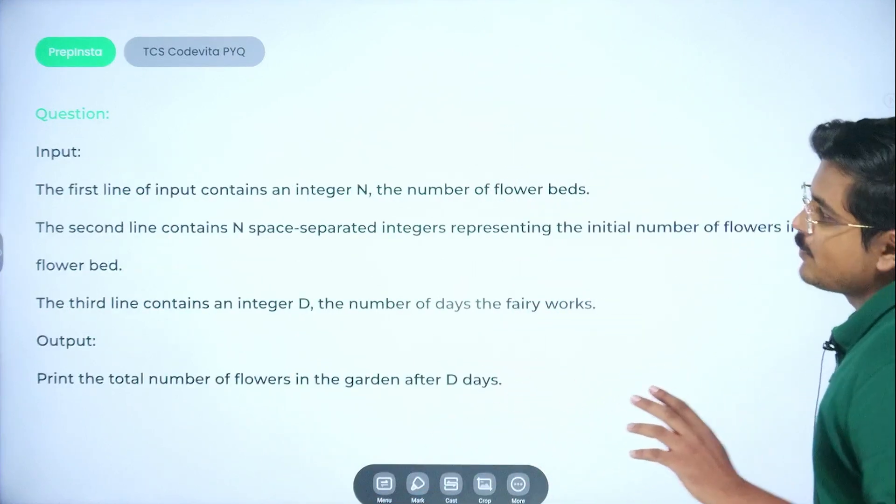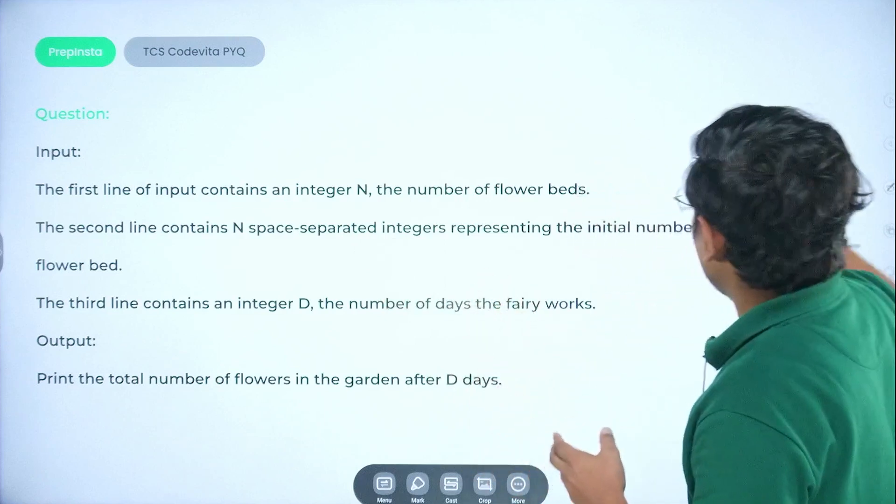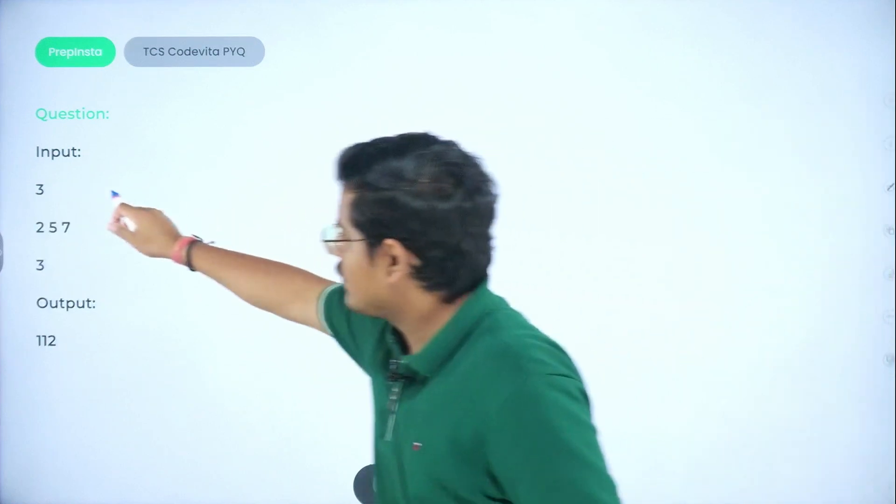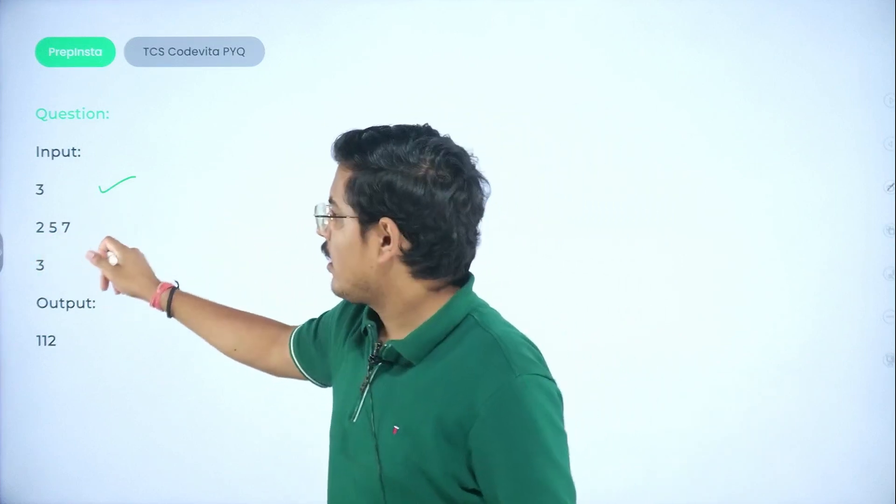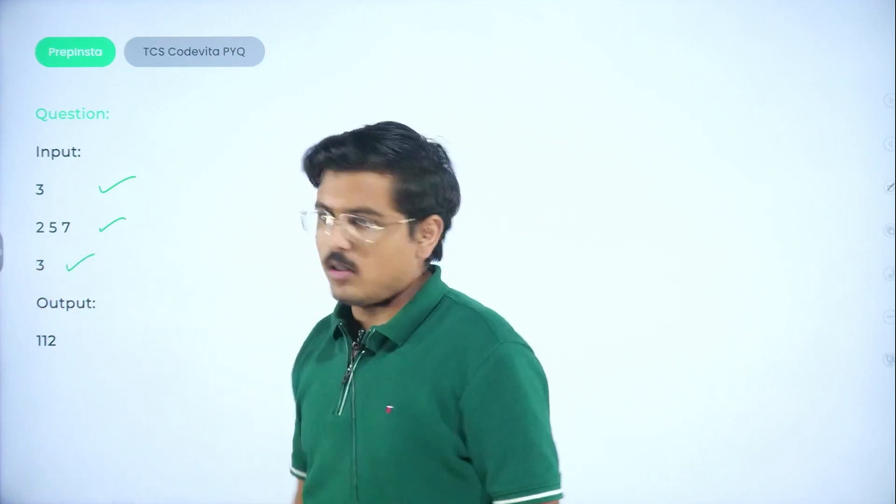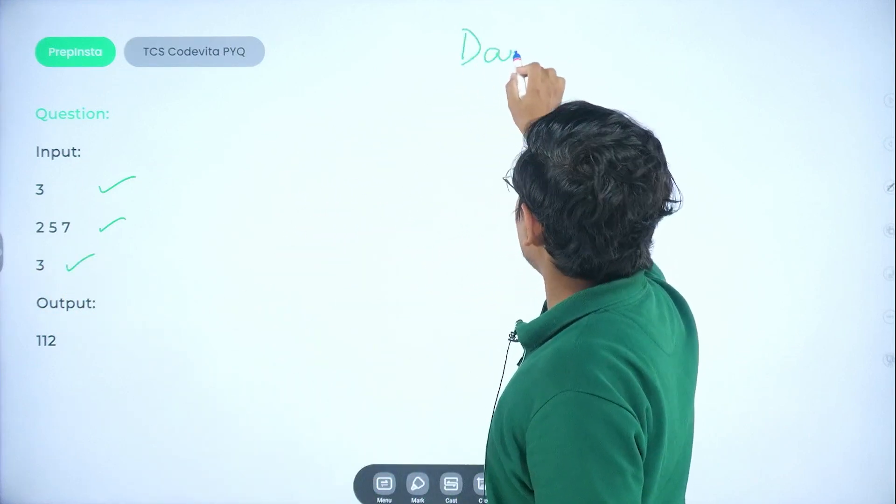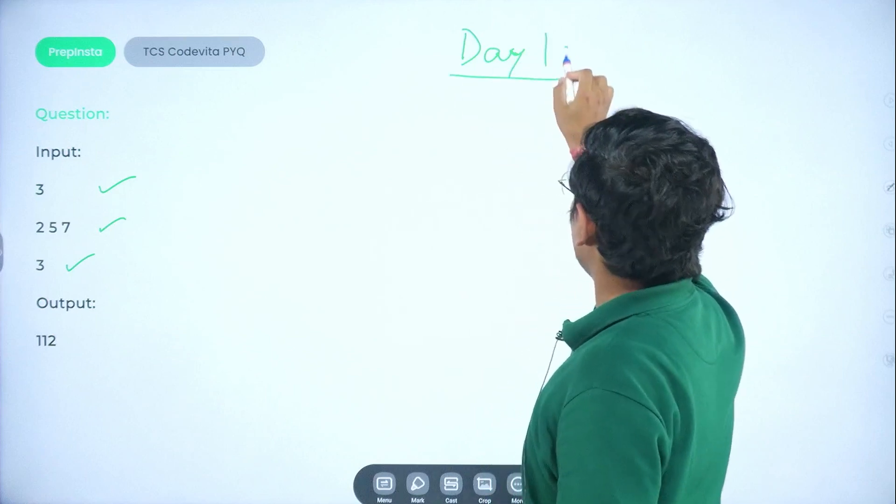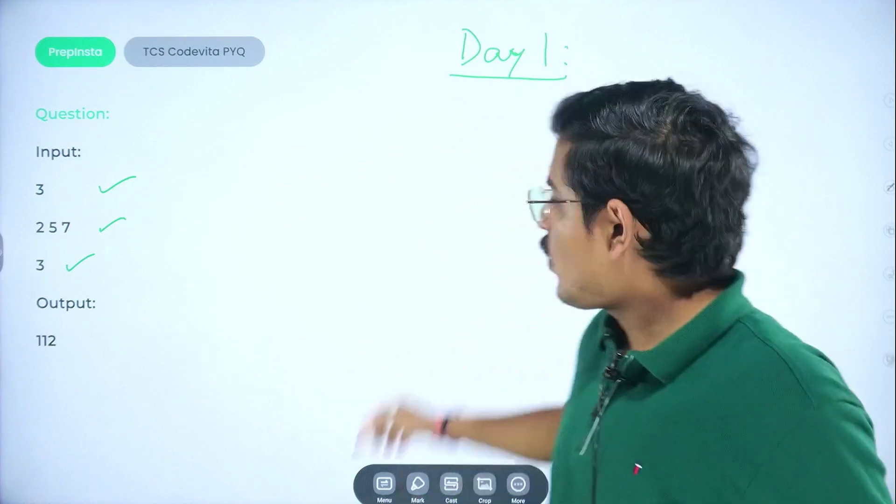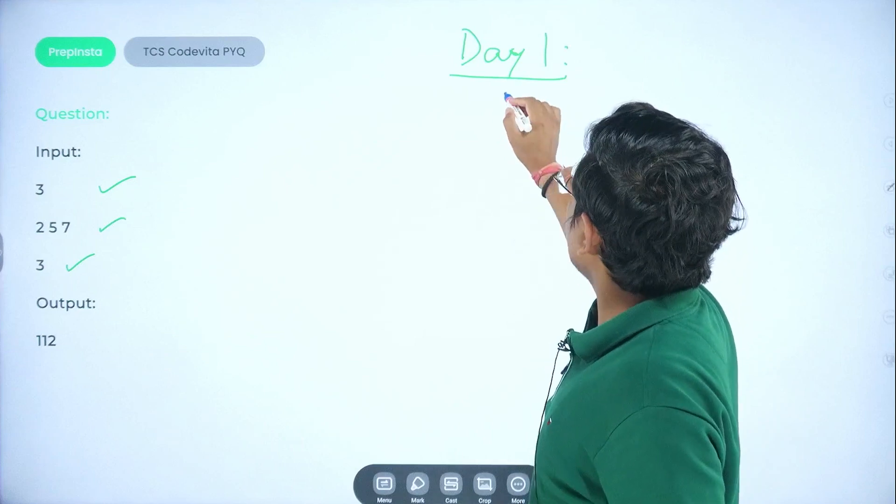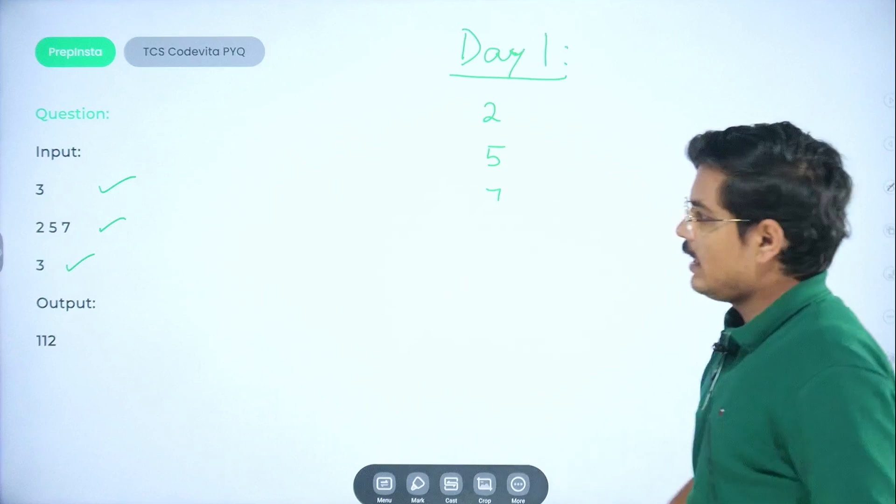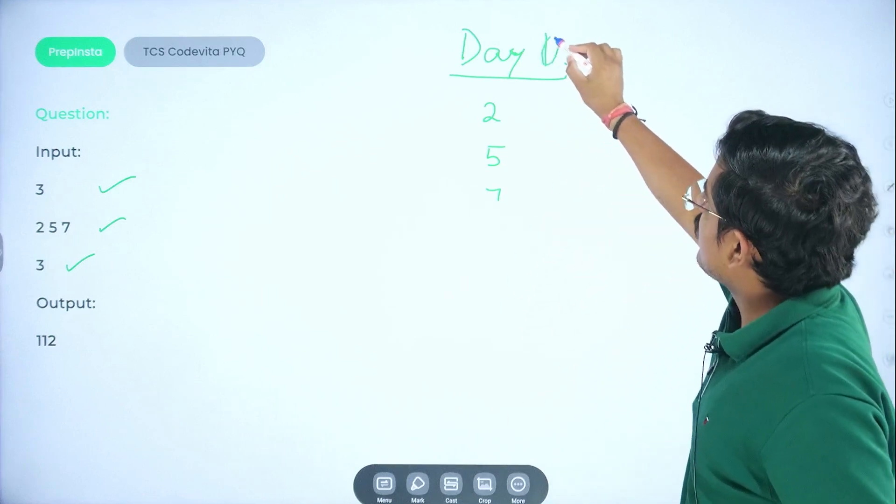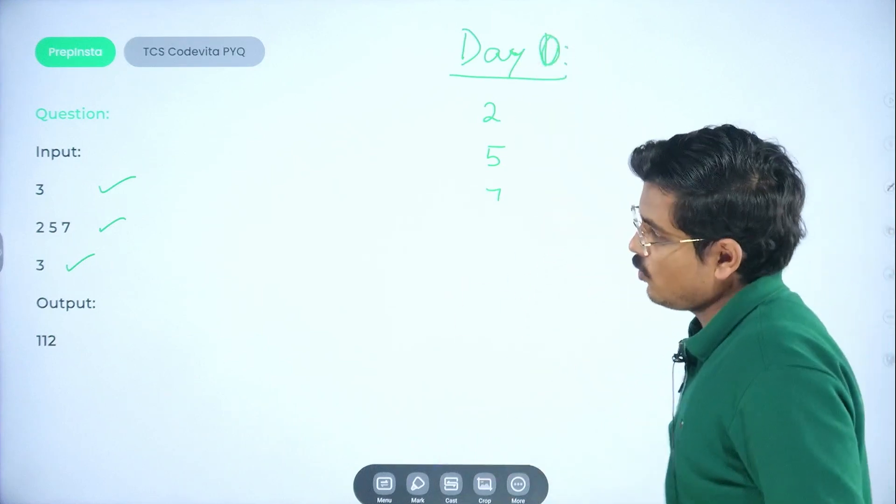Basically what I am saying is, the first line of input would contain an integer n, which would specify the number of flower beds. Then in every flower bed, basically in every row, how many flowers are there, and then how many days did the fairy work. If I talk about day 0 actually, this is the initial start. So, day 0: 2, 5, and 7.